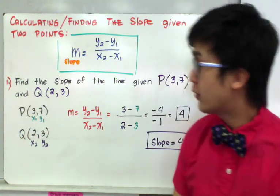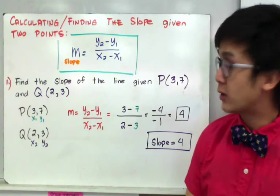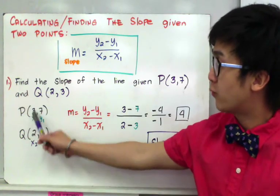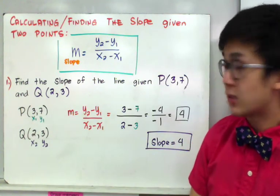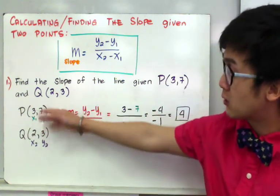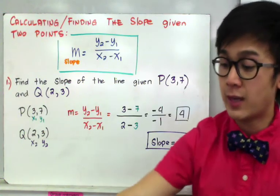Now what if you interchange your Q and P? So instead of using x sub 1 for 3, you use x sub 1 for 2 and vice versa. Will you still have the same answer if you switch your 2 points? And the answer is yes.